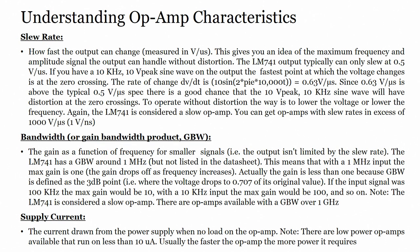Slew rate refers to how fast the op-amp can change its output, measured in volts per microsecond. This gives an idea of the maximum frequency and amplitude of a signal the output can handle without distortion. For LM741, the typical slew rate is about 0.5 volts per microsecond. For a 10-volt peak-to-peak sine wave, the fastest rate of change at the zero crossing is dV/dt = 0.63 volts per microsecond. Since 0.63 V/µs exceeds the 0.5 V/µs specification, a 10 V peak-to-peak sine wave has a good chance of distortion at zero crossings.